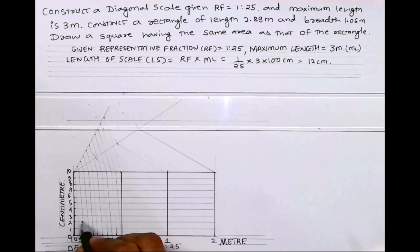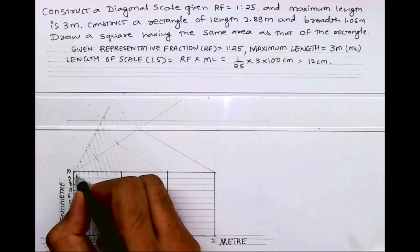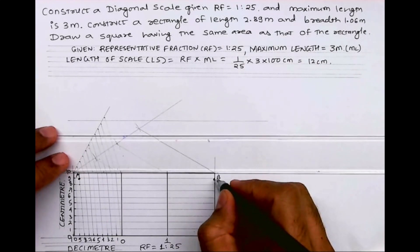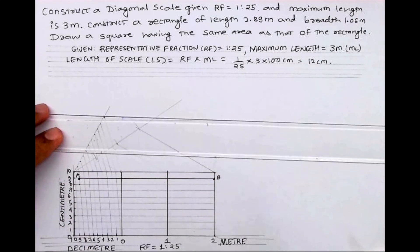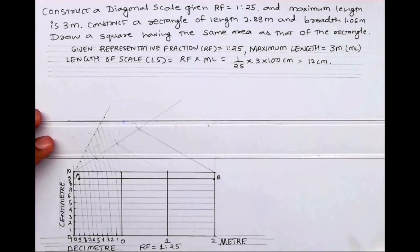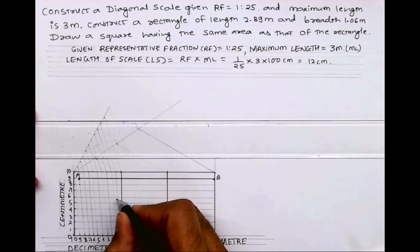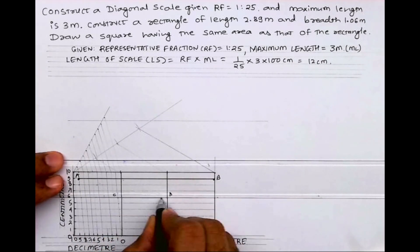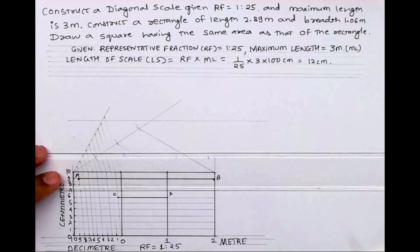Now we need to mark 2.89, so 2, 8, and 9 — so this line AB is 2.89. Then we need to mark 1.06, so 1, 0, and then 6 — 1, 2, 3, 4, 5, 6 — so CD is 1.06. Now what we will do is use AB and CD to draw a rectangle.